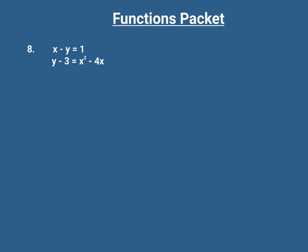I'm going to get y by itself in this second equation, just because it's easier for me to write since it's on the bottom. In order to get y by itself, we can just add three to both sides of the equation — these are going to cancel — so what I'm left with is y equals x squared minus 4x plus 3.